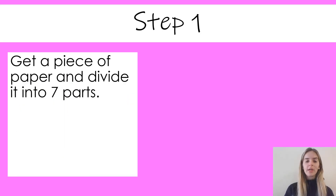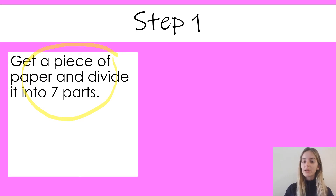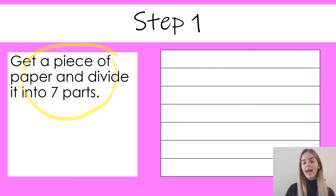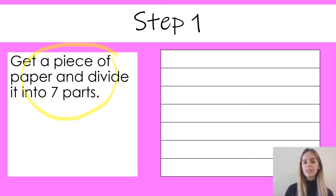Now what we're going to do is create a class timetable of things that we do throughout the day. On the left hand side I have some instructions of what we're going to do together. Step one says to get a piece of paper and divide it into seven parts. Instead of using paper today I have created this on a Word document, so we're testing out our typing and computer skills in today's lesson.